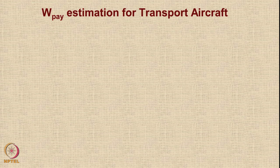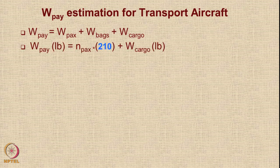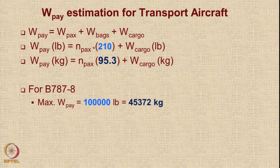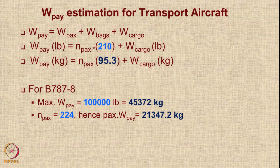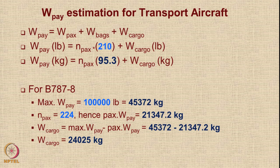Let us look at the W_payload estimation. The payload consists of passenger weight, baggage weight, and cargo weight. Each passenger including baggage is assumed to weigh 210 pounds. The maximum payload for Boeing 787-8 is 100,000 pounds. With 224 passengers, the payload from passengers and baggage is 21,347.2 kg. In our design mission, we assume no extra cargo is carried, so we only carry the 224 passengers and their baggage.